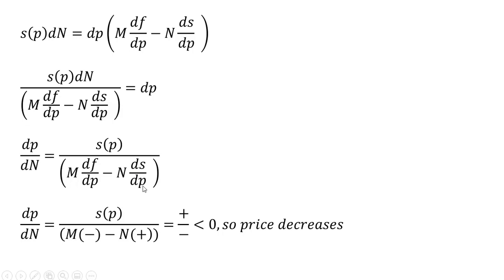And then, we got minus N times the derivative of the supply equation with respect to price, ds/dp. Supply curves slope upward, so that derivative is positive. So, we got a negative minus a positive number. Therefore, our denominator will be negative.